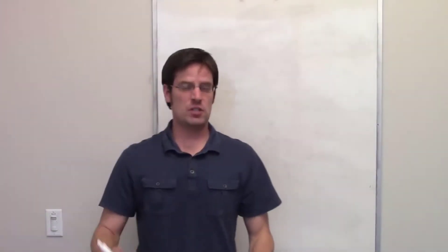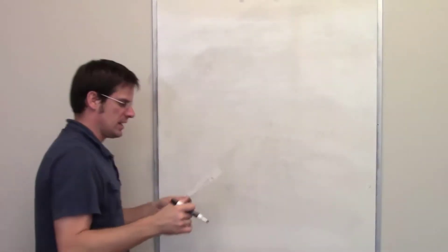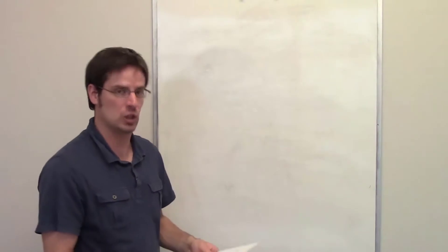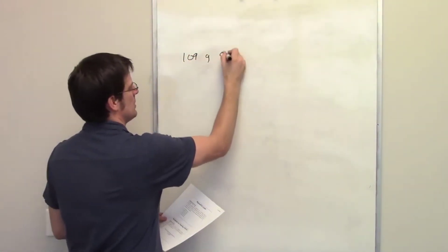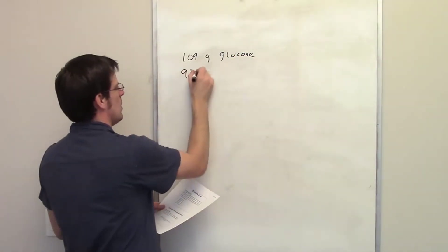This beautiful question involves doing a problem with Raoult's Law. It asks us to calculate the vapor pressure of a solution made by dissolving 109 grams of glucose in 920 milliliters of water.